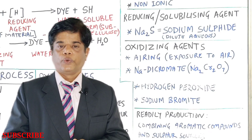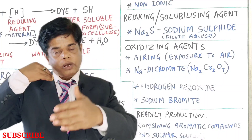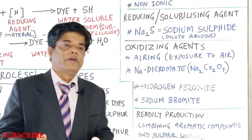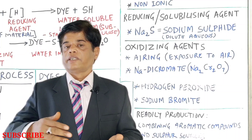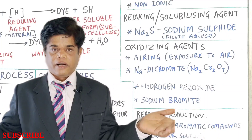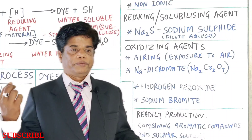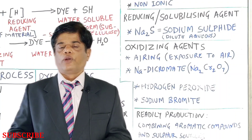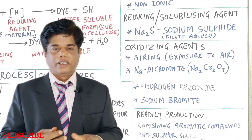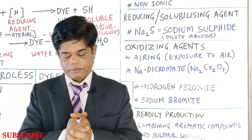So the fabric needs to be treated again with oxidizing agents to reconvert the soluble form of the dye present in the fiber structure back to its original insoluble form. For small quantities, exposure to free air — called airing — is sufficient. For bulk production, oxidizing agents such as sodium dichromate (Na₂Cr₂O₇), hydrogen peroxide, or sodium bromide are used. Common salt is also used for color exhaustion purposes.